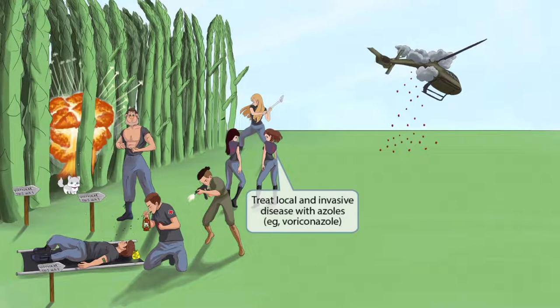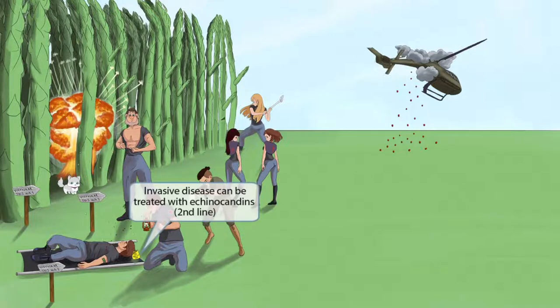We've added two girls wearing shawls with the letter A on them — Vietnam spies that have infiltrated the U.S. Army. The shawl with the letter A is our symbol for the azole medications. We've included these two girls to help you remember that local and invasive disease should be treated with azoles, such as voriconazole. Finally, there are funyuns on the stretcher, which is our symbol for the echinocandins. This helps you remember that invasive disease can also be treated with echinocandins; however, these are second-line and voriconazole should be used first.